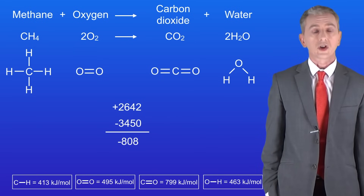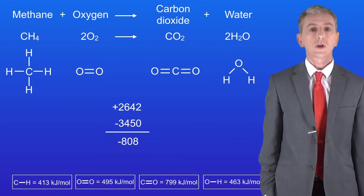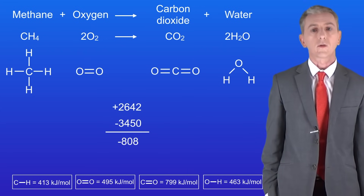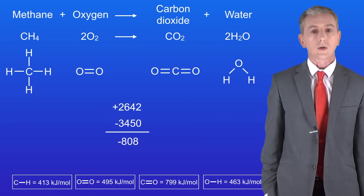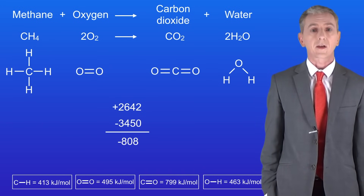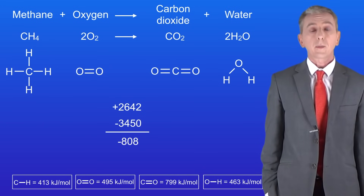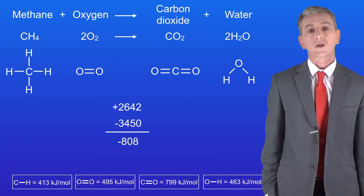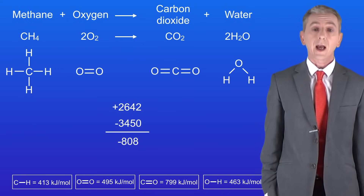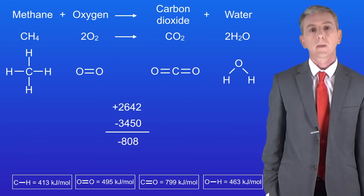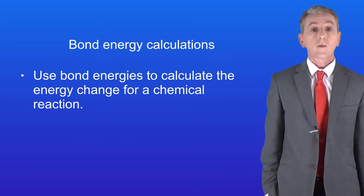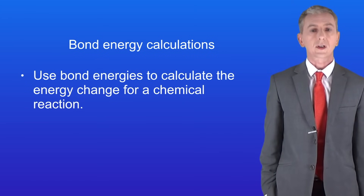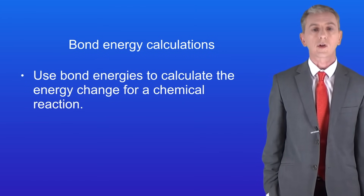To work out the total energy change for the reaction we subtract 3450 from 2642. This gives us a value of minus 808 kilojoules — that's our final answer showing that this reaction is exothermic. You'll find plenty more examples of bond energy calculations in my revision workbook, and you can get that by clicking on the link above. Hopefully now you should be able to use bond energies to calculate the energy change for a chemical reaction.